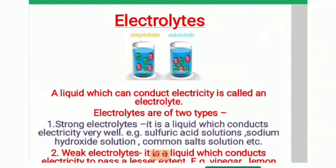A liquid which can conduct electricity is called an electrolyte. Electrolytes are of two types: one is a strong electrolyte, and the other is a weak electrolyte.